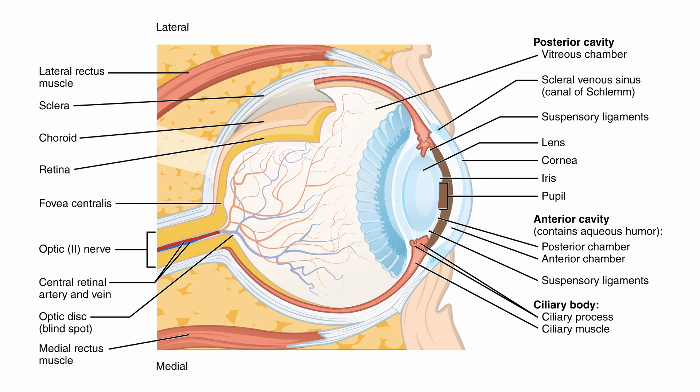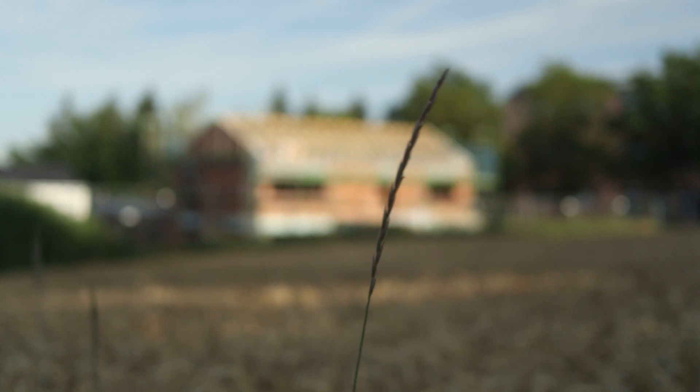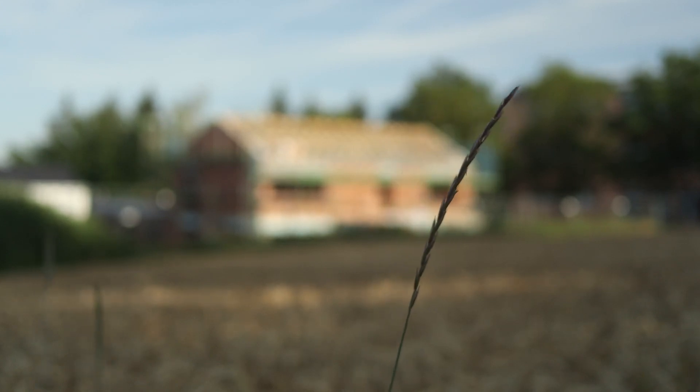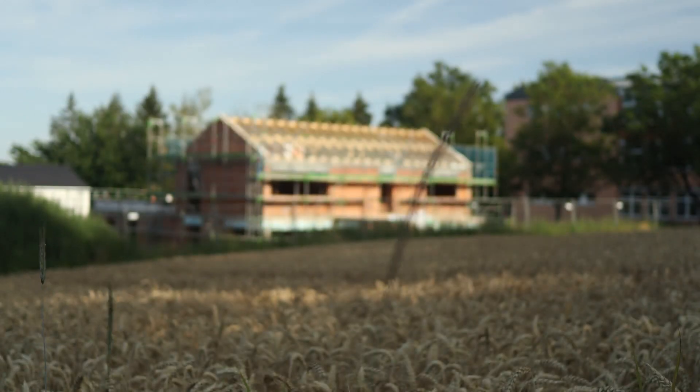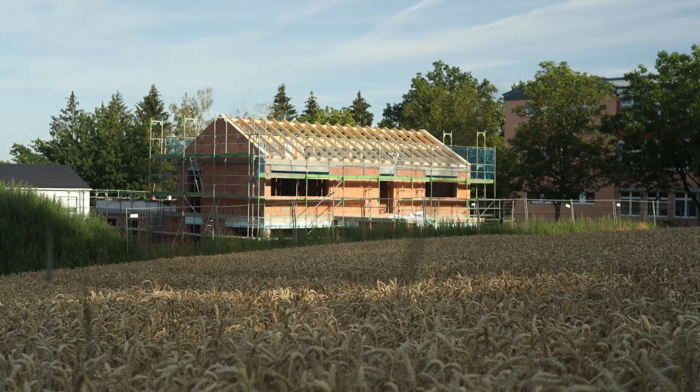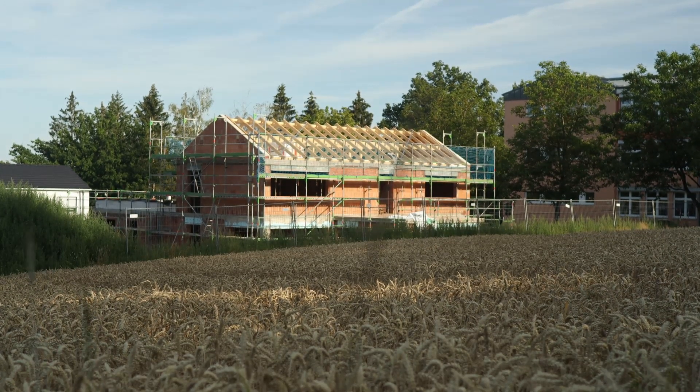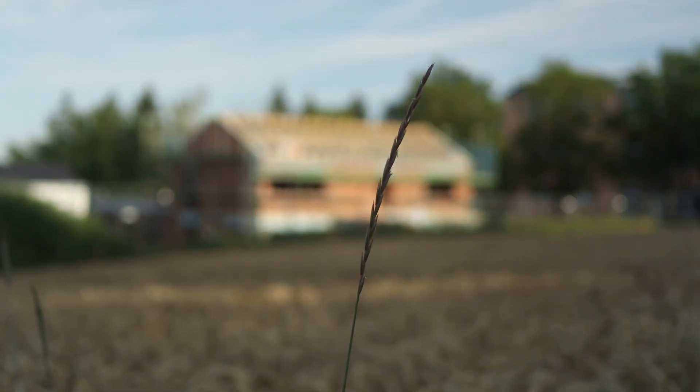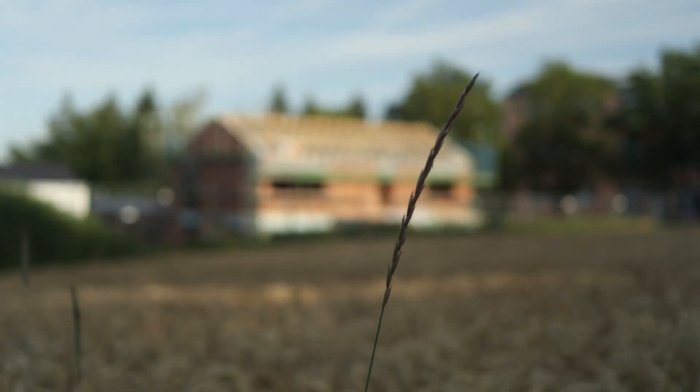We have a lens in our eyes that we need in order to focus — to get distant objects as well as close-up objects into focus. This lens changes its shape depending on the ciliary muscle. When we look at something close up, the lens assumes a more round shape because the light from an object a short distance away needs to be refracted more.